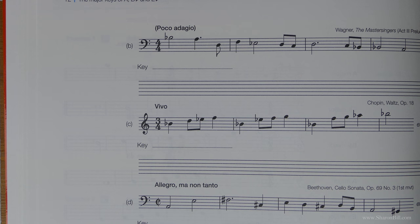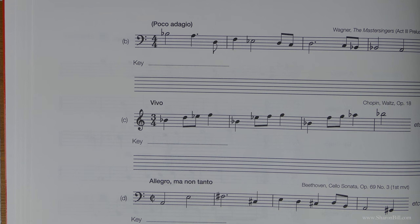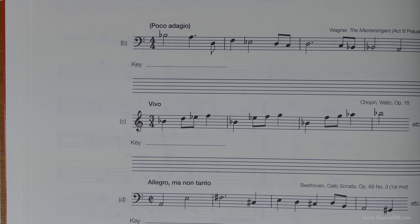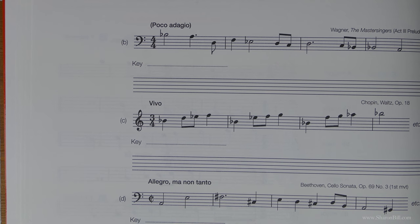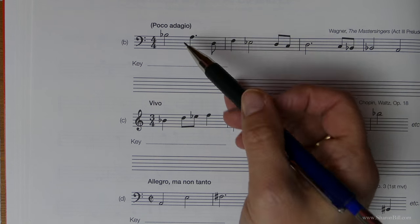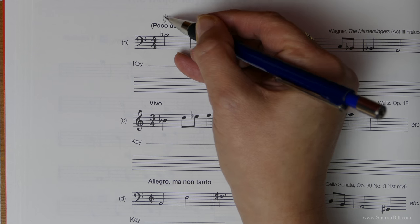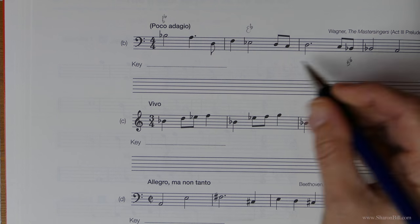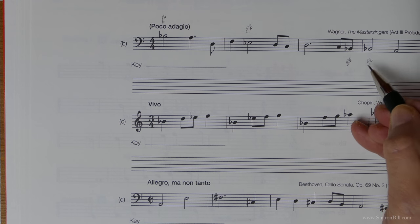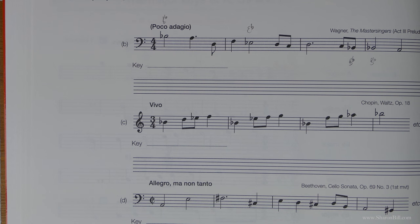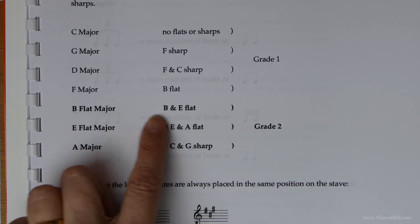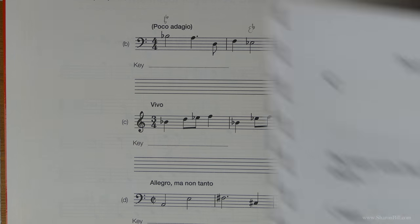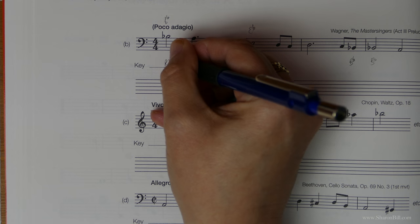I'm presuming you've had a little go at this yourself - please do try it on your own. It really doesn't matter if you make mistakes or have to rub it all out. We're only ever writing in pencil. So let's look at what we've got: we're in bass clef. We've got a B flat here, an E flat here, another B flat. So we've got B flats and E flats, and referring to your PDF, that tells us we're in B flat major.